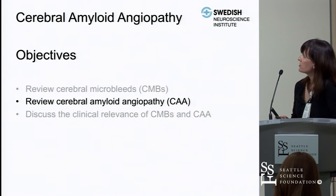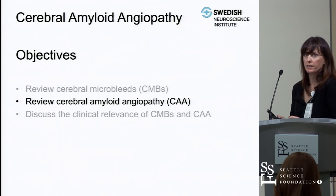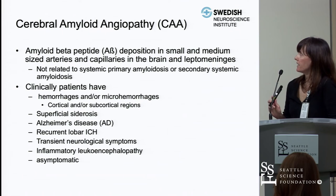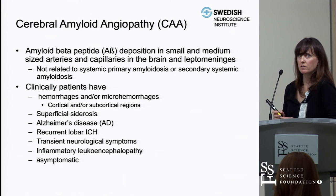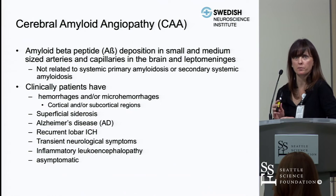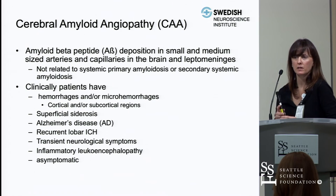Shifting to cerebral amyloid angiopathy, which has a strong relationship with cerebral microbleeds: cerebral amyloid angiopathy is amyloid beta peptide deposition in small and medium-sized arteries and capillaries in the brain and leptomeninges. It is not related to systemic amyloidosis. Clinically, patients can have a wide range of presentations, or it can be found incidentally on MR imaging in asymptomatic patients.